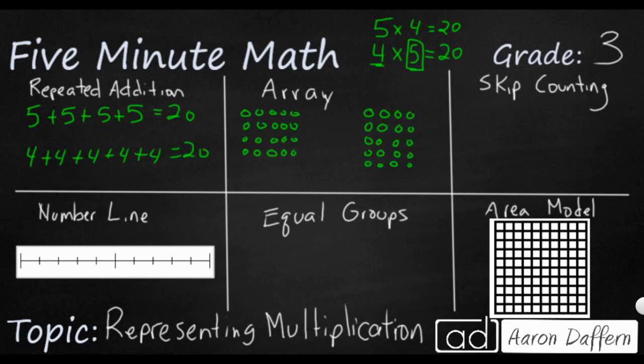Skip counting is literally just counting by that number. So if I wanted to say five, I'm going to skip to the next multiple of five, up to 20. This is going to be extremely important as you learn more and more about multiplication facts — learning how to skip count by all of the factors.